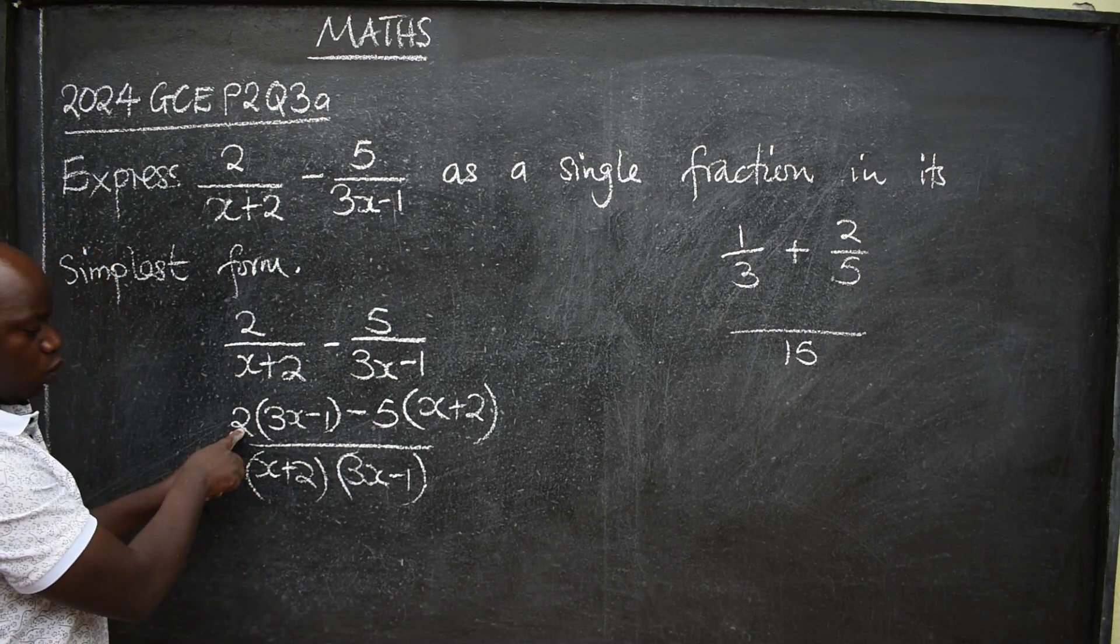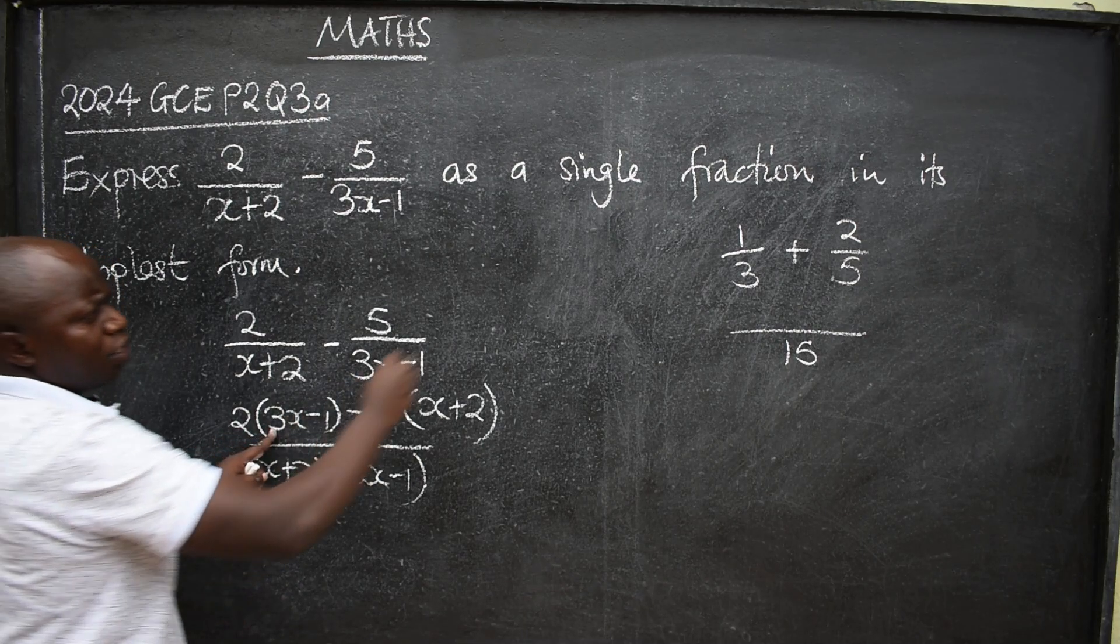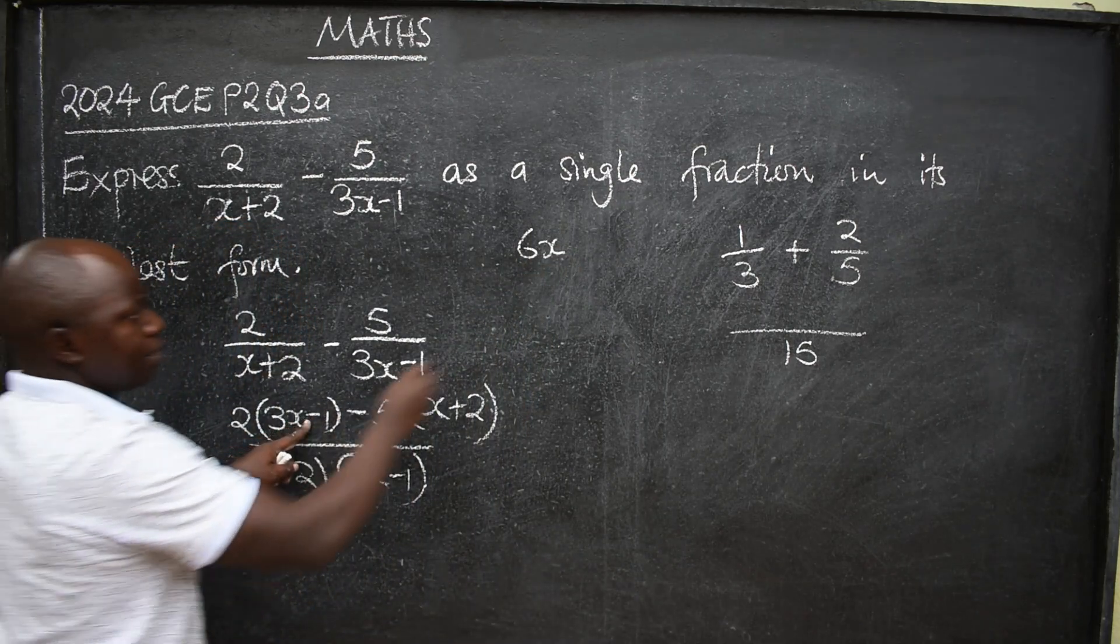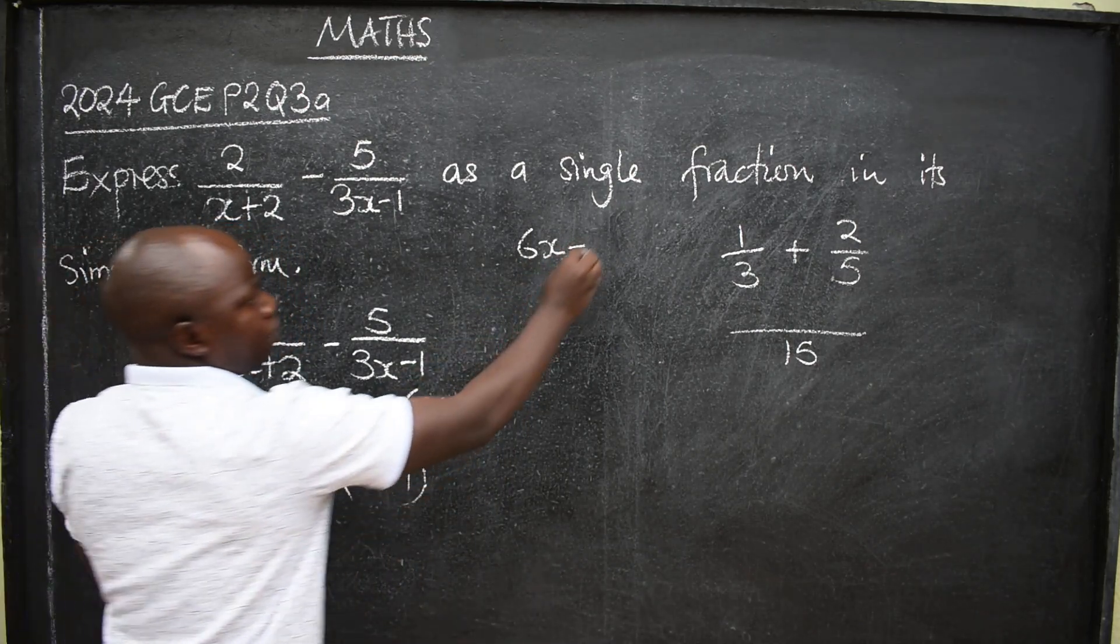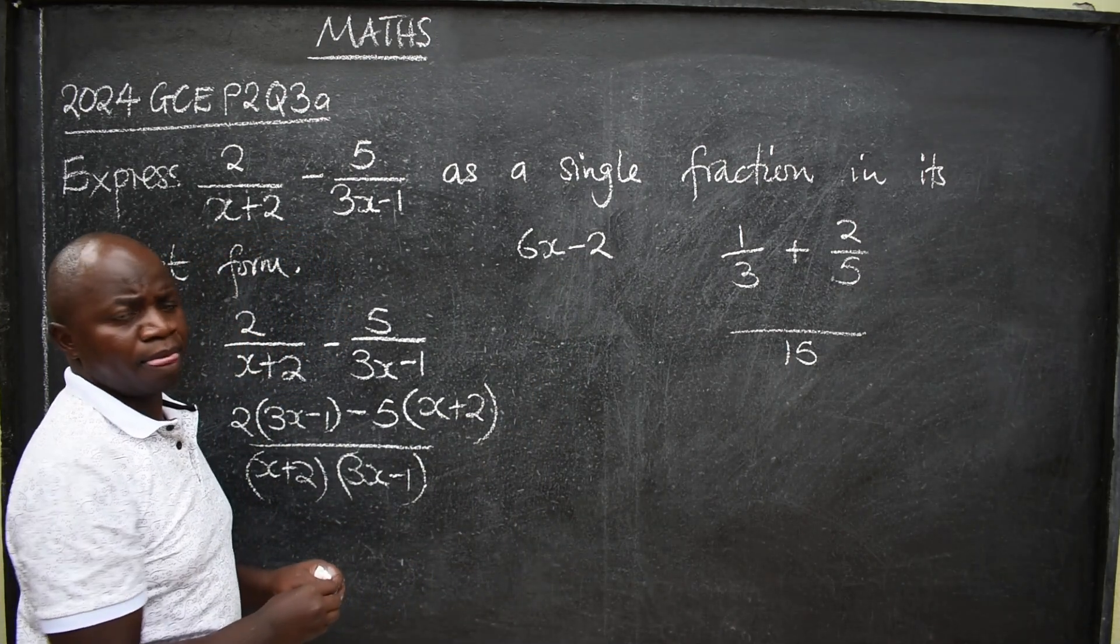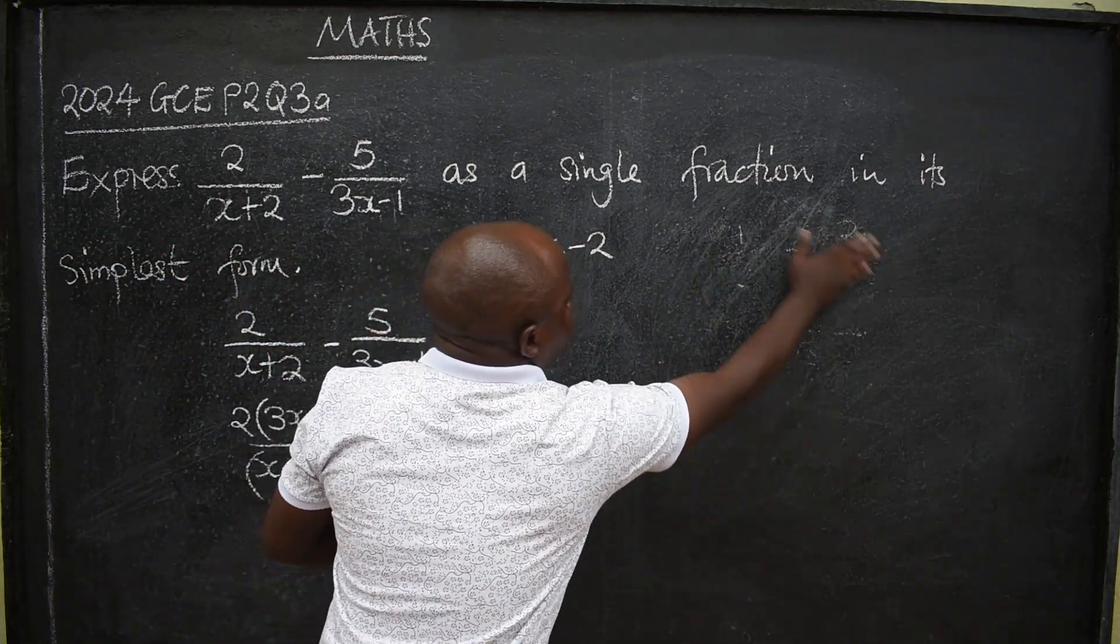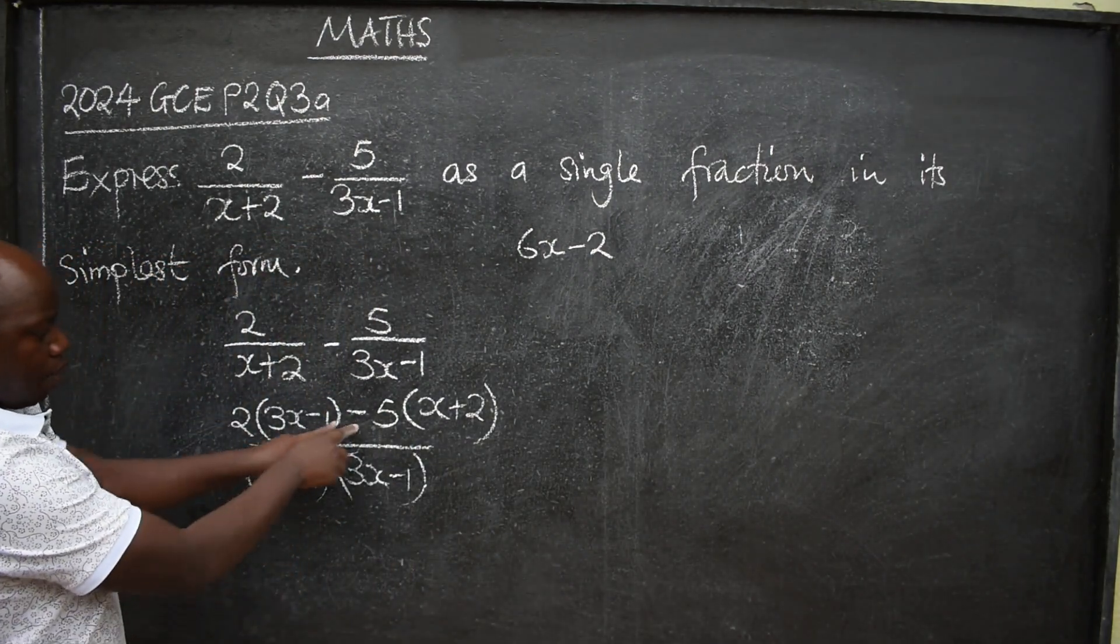Which will now be 2 times 3x. It will give us 6x, like this. Minus 2 times 1. It will give us a 2. Okay? Then the next, we have 1. We're going to have 1. Minus here.